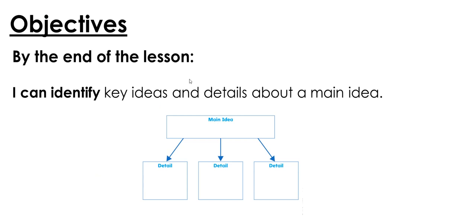For this lesson we have this objective: by the end of the lesson you're going to be able to say, 'I can identify key ideas and details about a main idea.' We're going to learn how to use a graphic organizer like the one you can see on your screen. Here we have the main idea — what is the text mainly about — and then we have spaces for details that you find in the text.